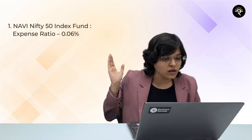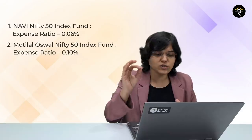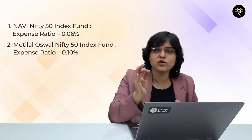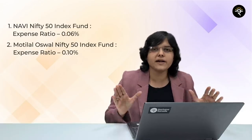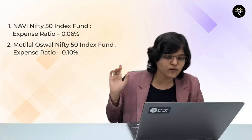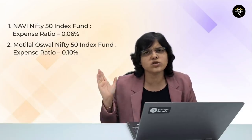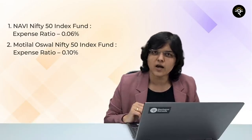Also have a look at NAVI Nifty 50 Index Fund and Motilal Oswal Nifty 50 Index Fund - their expense ratios are very low. NAVI has an expense ratio of just 0.06% and Motilal Oswal has 0.1%. However, SEBI says it's not mandatory to disclose tracking error, so these two don't show it. If you're okay investing without knowing tracking error, I'd select NAVI Nifty 50 Index Fund due to its very low expense ratio. Otherwise, ICICI Prudential remains the top pick.